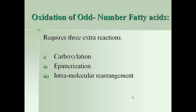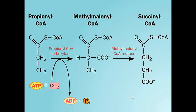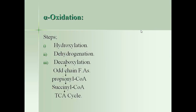Oxidation of odd-number fatty acids produces propionyl-CoA. Propionyl-CoA undergoes carboxylation and by the help of mutase undergoes intramolecular rearrangement to convert propionyl-CoA into methylmalonyl-CoA, and methylmalonyl-CoA is then converted by mutase — utilizing vitamin B12 — into succinyl-CoA.